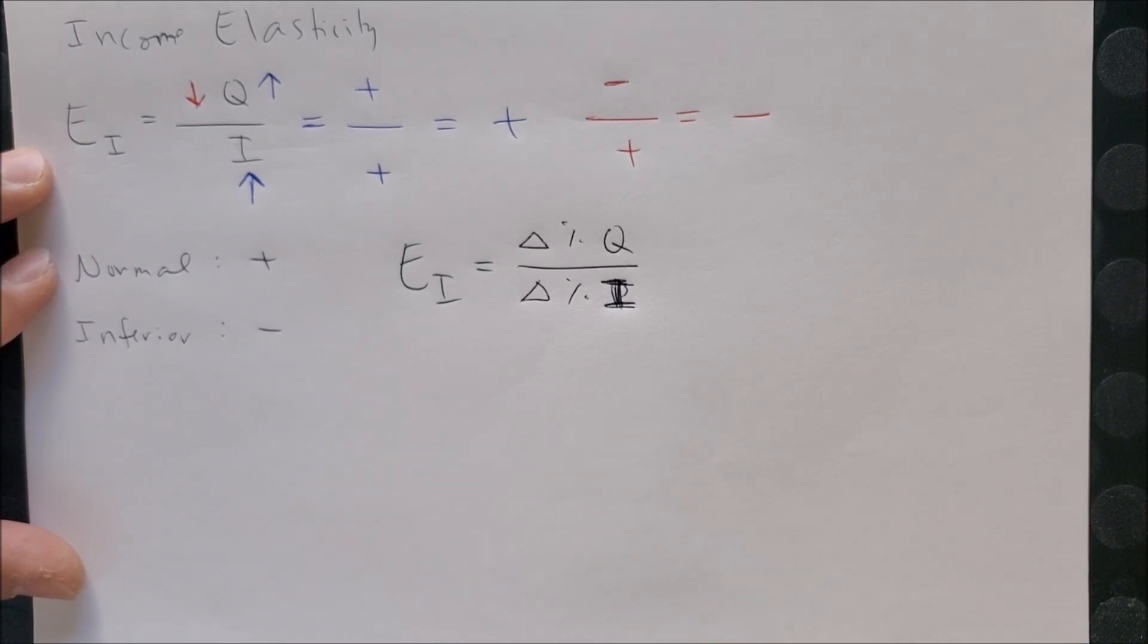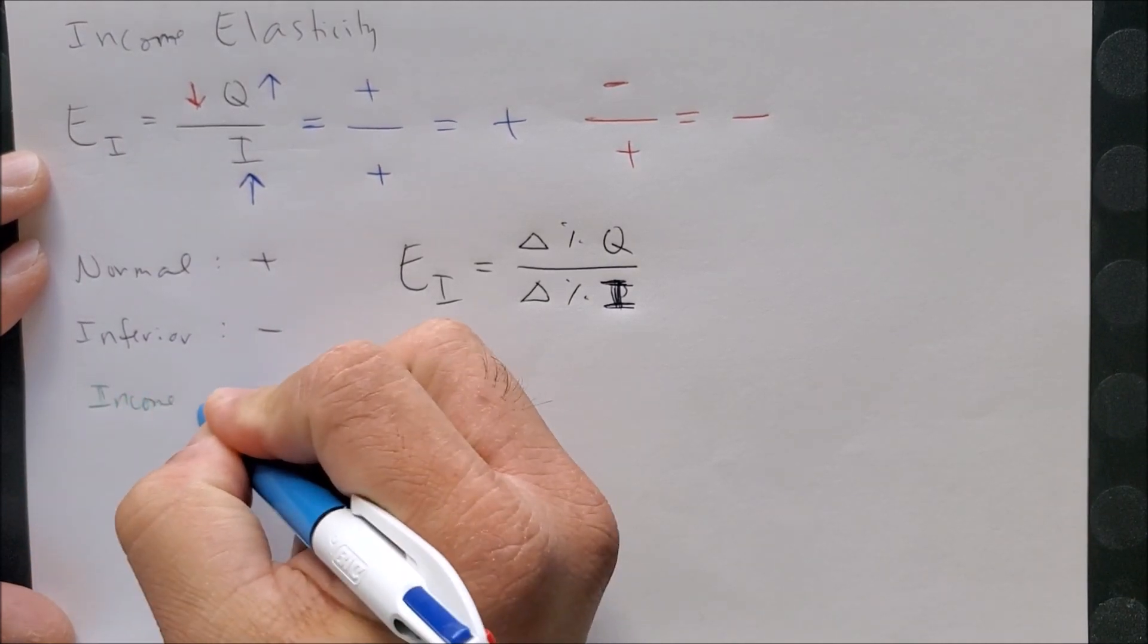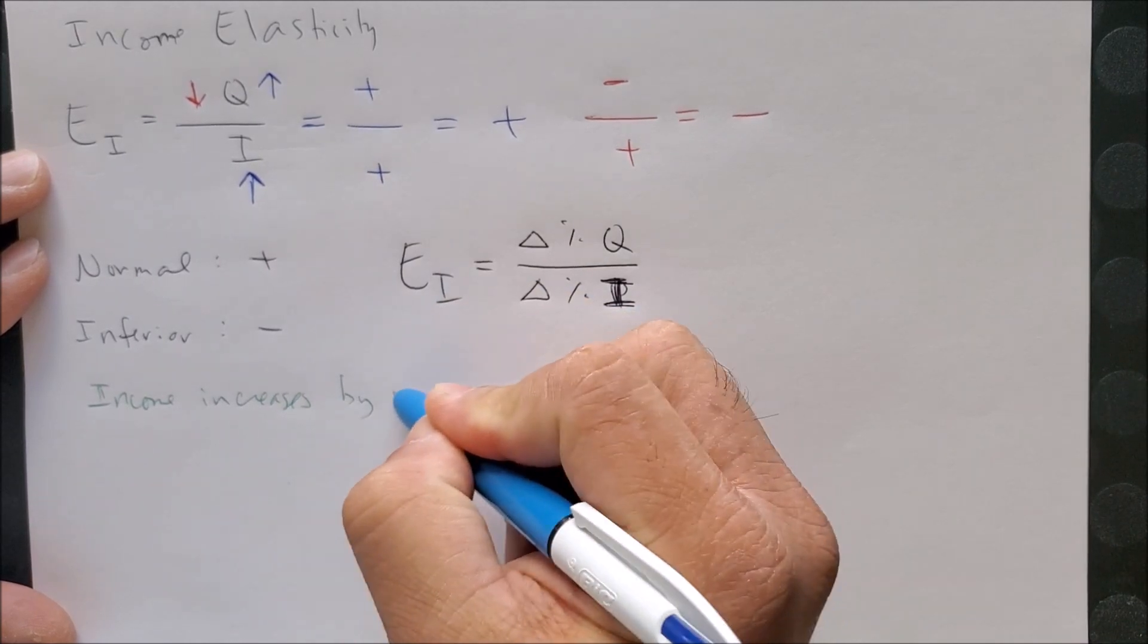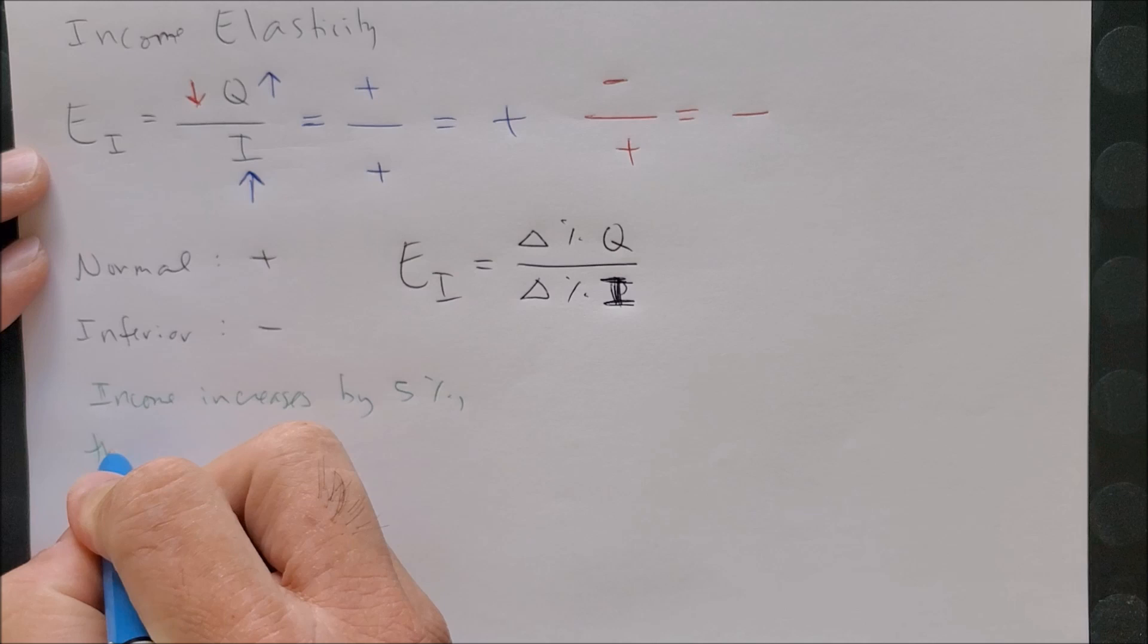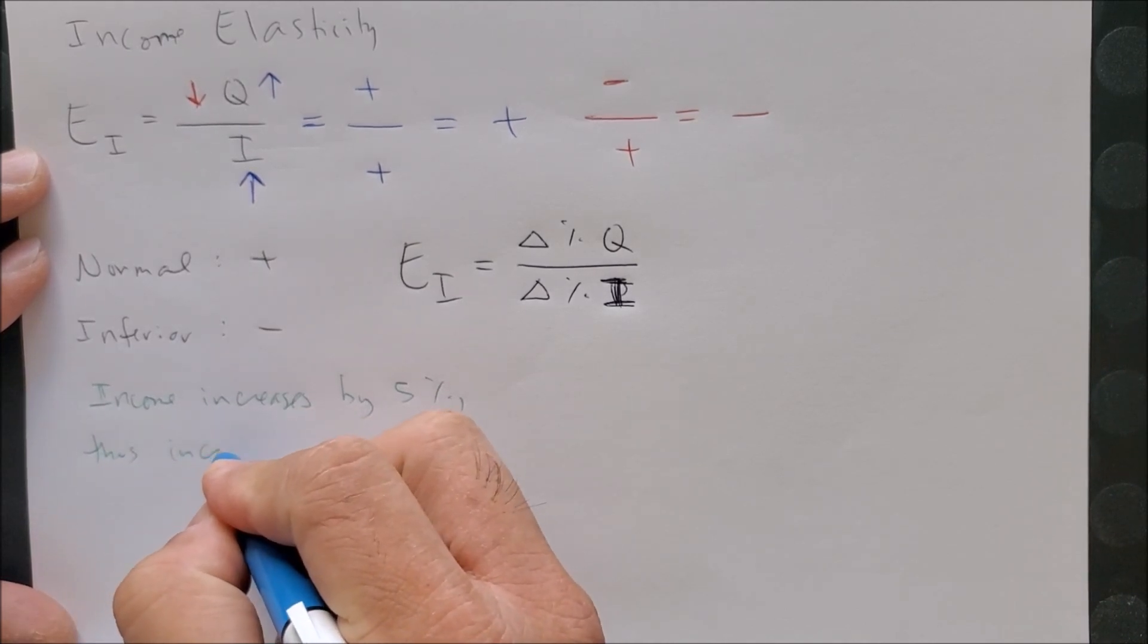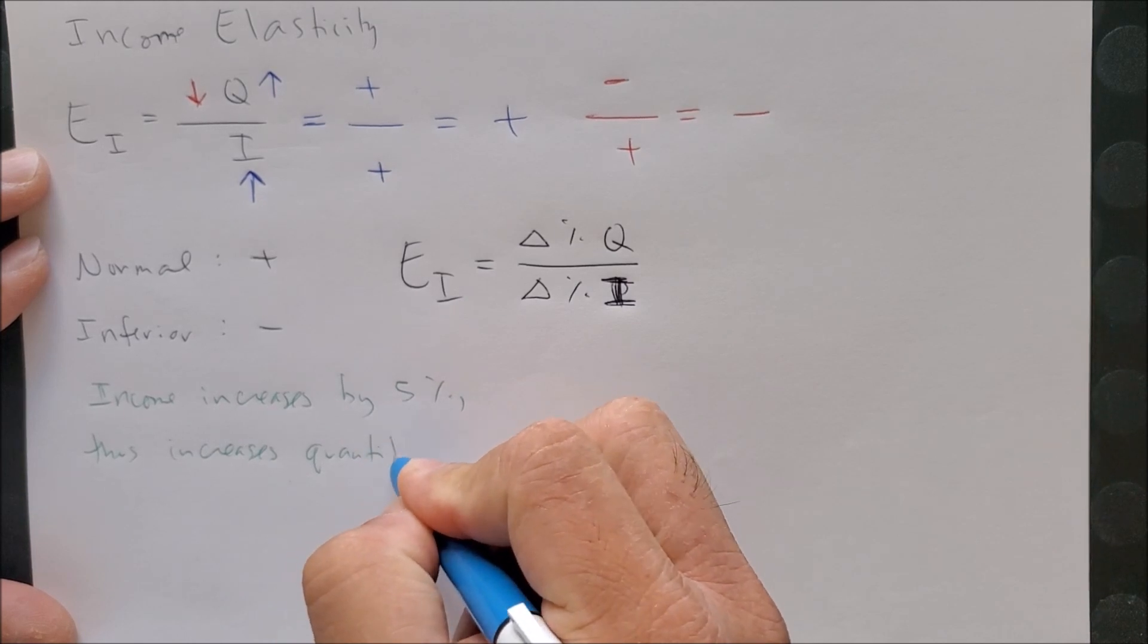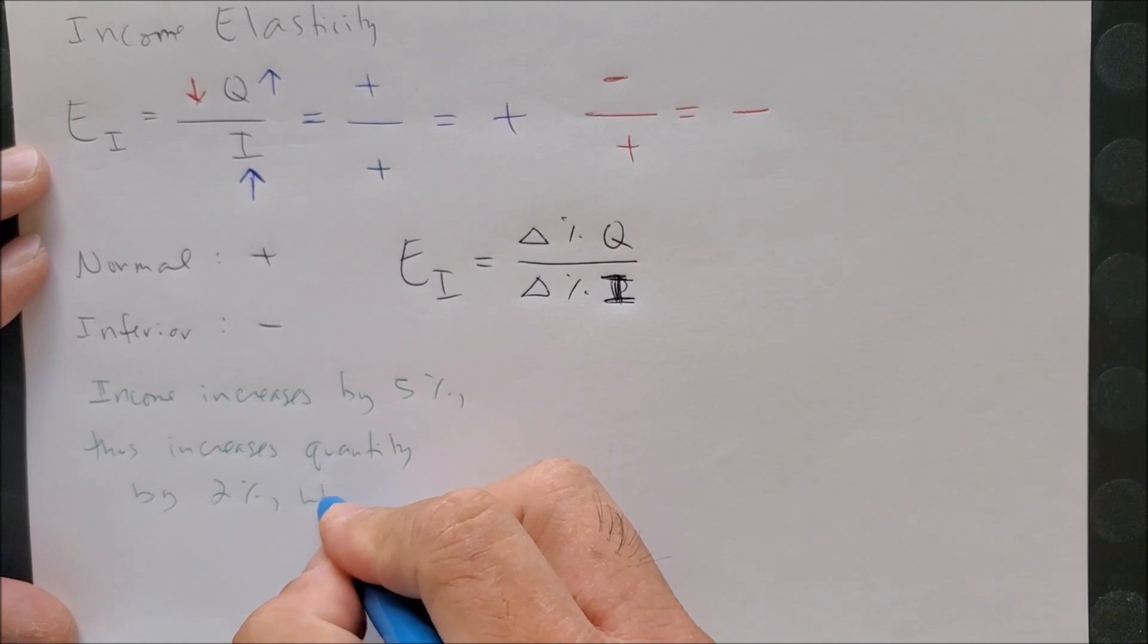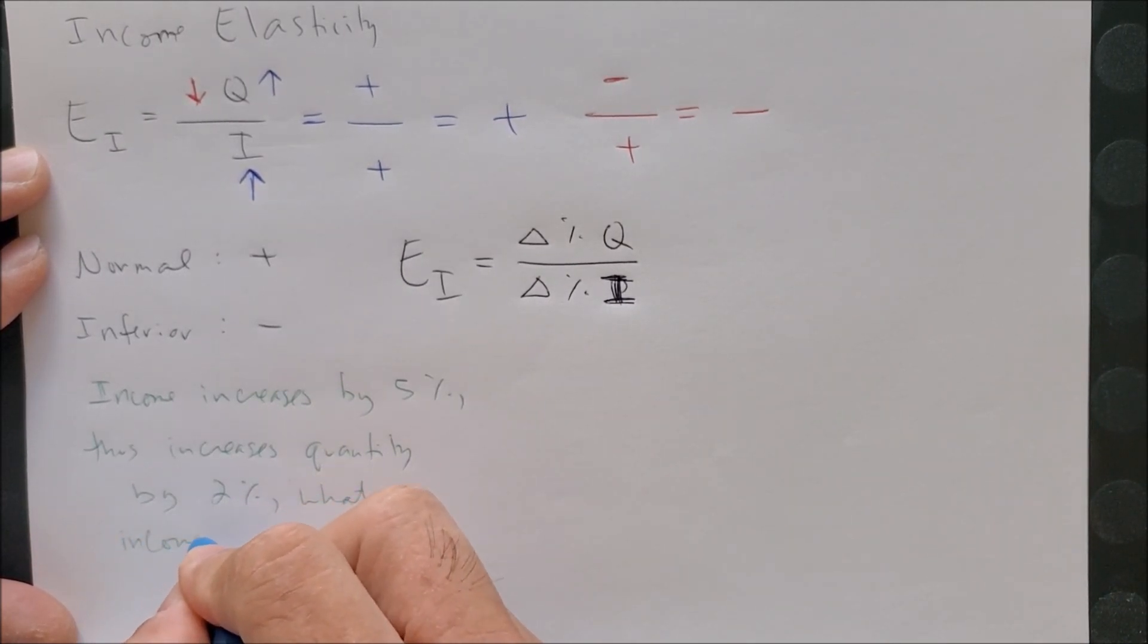So for example, if we were to have, let's say, income increases by 5%, thus increases quantity by 2%, what is the income elasticity?